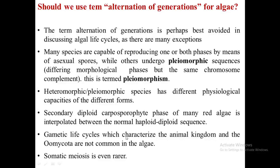Gametic life cycles, which characterize the animal kingdom and the Oomycota, are not common in algae and appear to have arisen independently in various algal groups. Somatic meiosis is even rarer, and is only reported in certain green algae and in some freshwater members of Batrachospermales. Due to all such evidence, many phycologists avoid using the term 'alternation of generation' for algae.